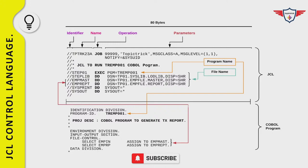After that, you have an execute statement marking the beginning of a step. The step name is STEP01, and the execute statement specifies PGM=TREMP001, which is the name of the COBOL program, highlighted in orange. Following that is a DD statement called STEPLIB, used to specify the library where the load module resides. The system will pick the load module from this particular library.